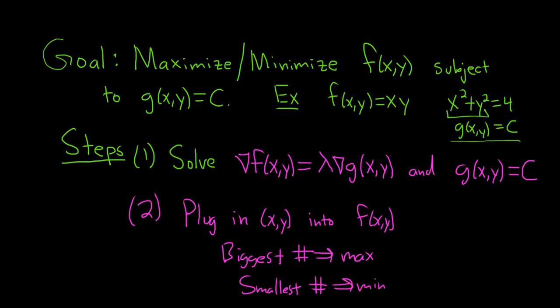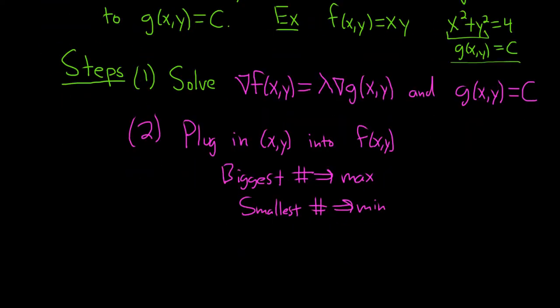That's how you use Lagrange multipliers. Let's do a really simple example. So we have f of x, y equal to x times y.